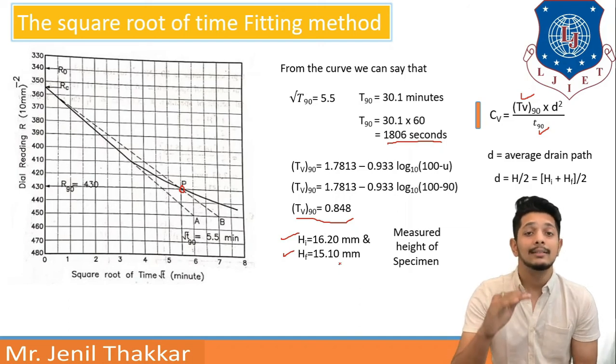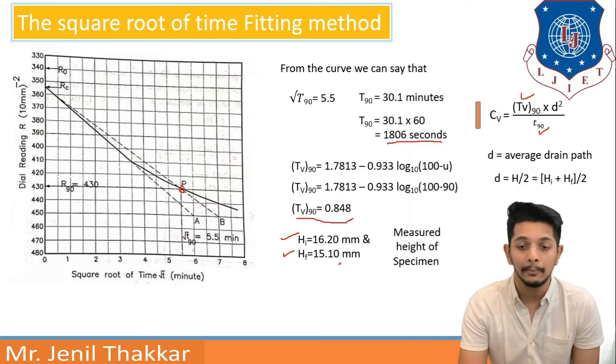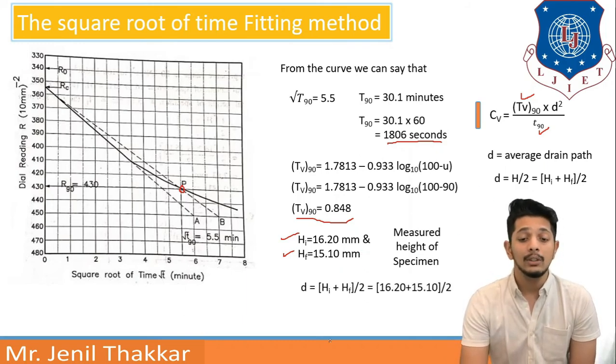So initially the size of the soil specimen was 16 mm and then it is reduced to 15.10 mm. Now putting these values in d, I am getting d answer as 0.783 cm.